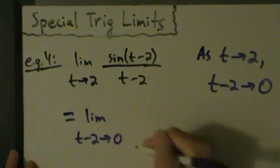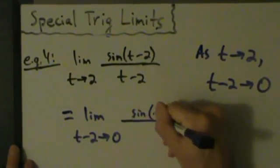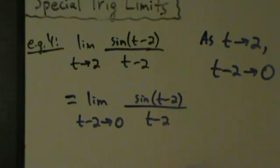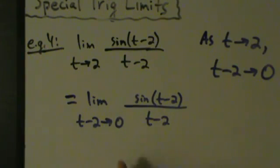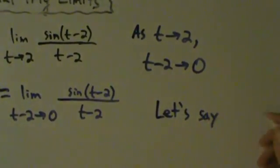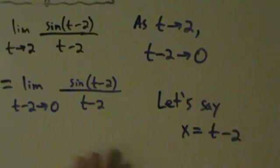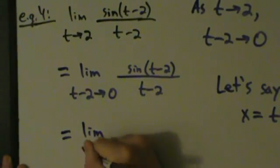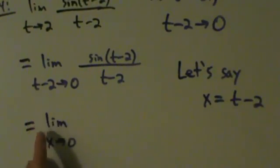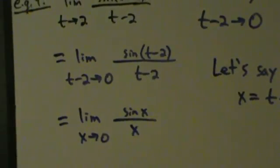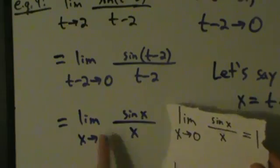So this limit is the same as the limit as t minus 2 approaches 0 of sine of (t minus 2) divided by (t minus 2). Now t minus 2, t minus 2, and t minus 2 are all the same thing and we have a 0 — that's what we want. We can make a substitution: let x equal t minus 2. Then this equals the limit as x approaches 0 of sine of x over x, which exactly is the special trig limit, so this equals 1.